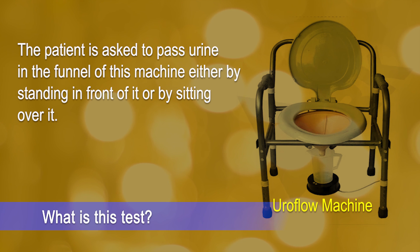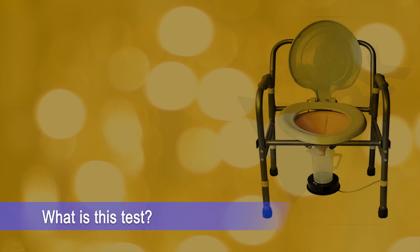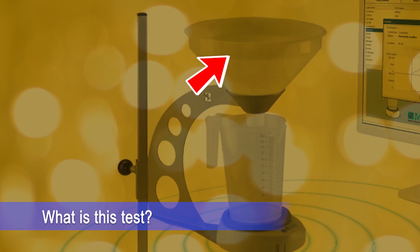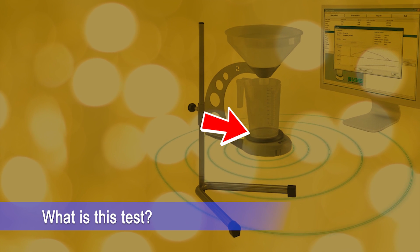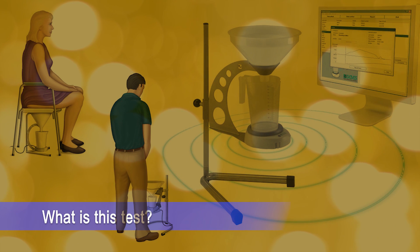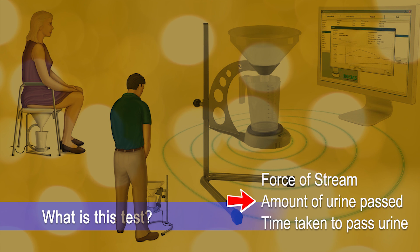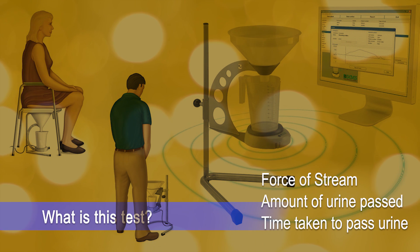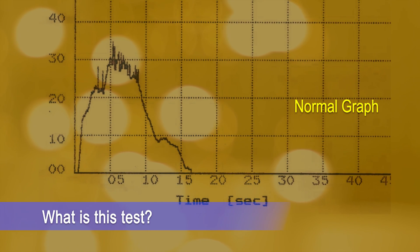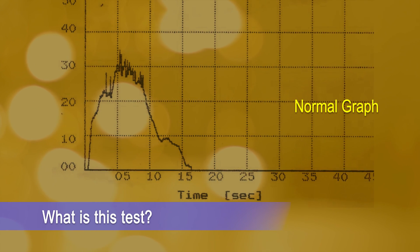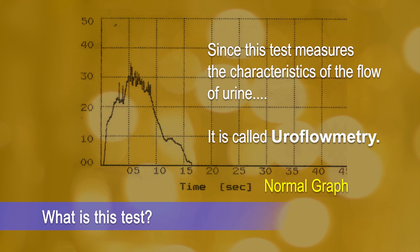A patient is asked to pass urine in this commode-like machine either by standing in front of it or by sitting over it. There is a funnel kind of system in the machine, and when you pass urine in this funnel it goes into a collection chamber capped on a sensor. As the sensor is connected to a computer, it records parameters like the force of your stream, how much urine you passed, and how much time you took. When you stop passing urine, a graph is generated by this computerized machine, and we look at this graph to decipher all the information related to your urination. Since this test measures the flow of urine, it is called uroflowmetry.